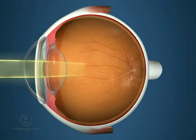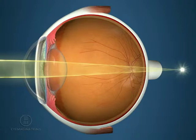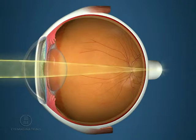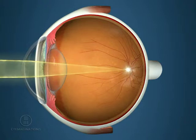Most cases of blurred vision are caused by errors of refraction. These errors do not allow the light entering our eyes to clearly focus on the retina.